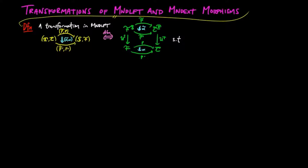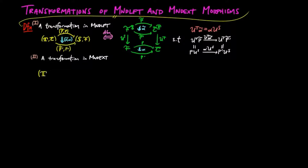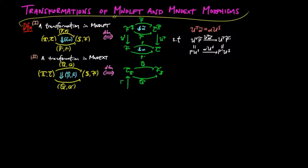such that uT·α̃ equals α·uS. And the transformation from the morphism Q̂Q to Q̂'Q' in the category of monad extensions consists of a pair of natural transformations, β̂ from Q̂ to Q̂', and β from Q to Q', such that β̂·FT equals FS·β.